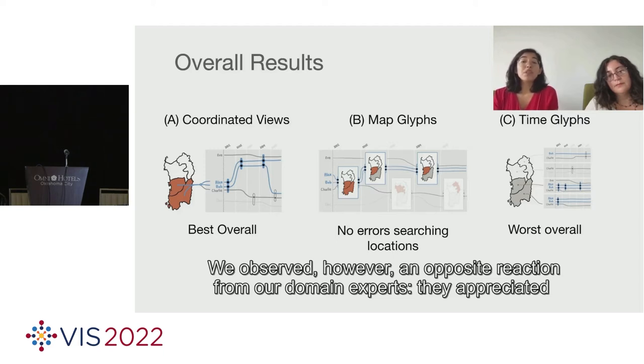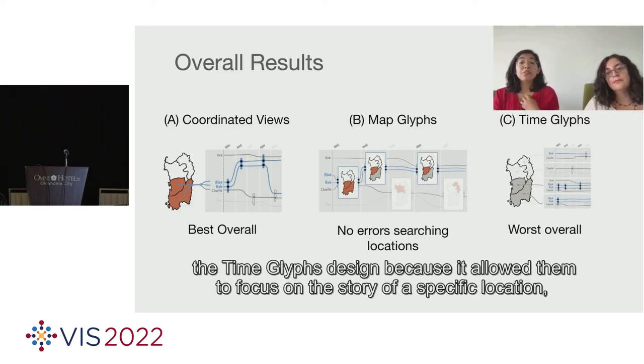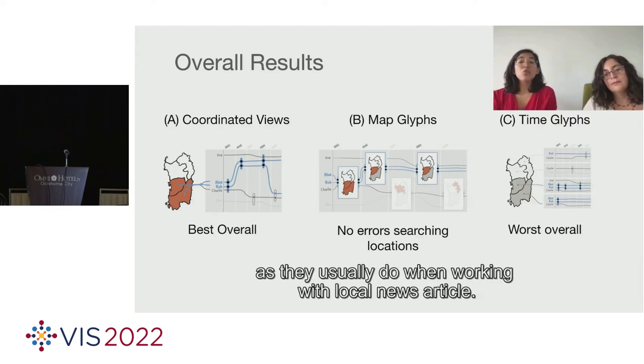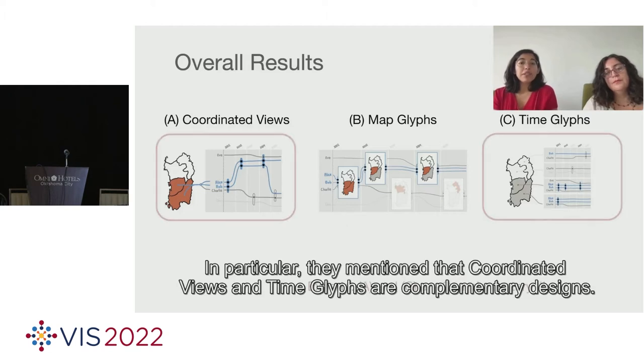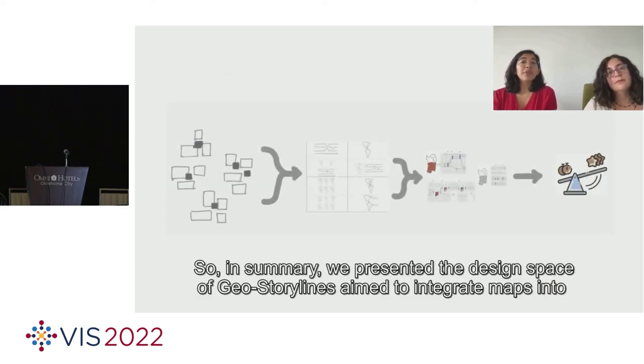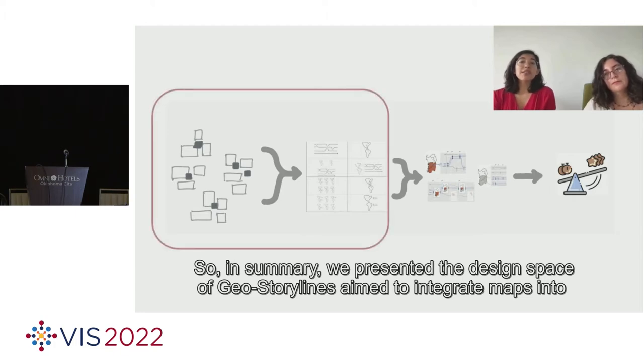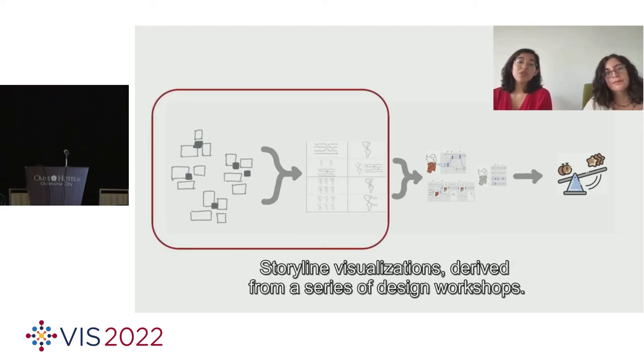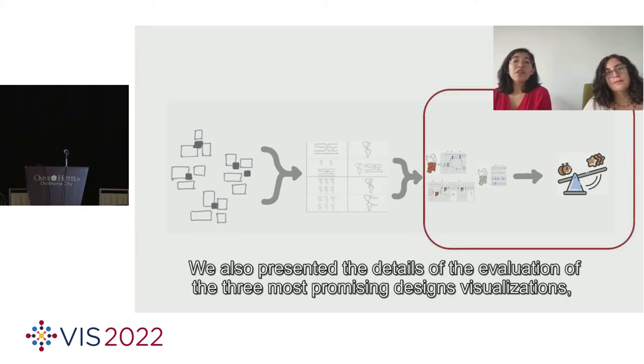We observed, however, an opposite reaction from our domain experts. They appreciated Time Glyphs design because it allowed them to focus on the story of a specific location, as they usually do when working for a local news article. In particular, they mentioned that coordinated views and Time Glyphs are complementary designs. So, in summary, we presented the design space of GeoStorylines aimed to integrate storylines into visualizations derived from a series of design workshops. We also presented the details of the evaluation of the three most promising design visualizations, both in a controlled user study and in feedback sessions with domain experts from data journalism.